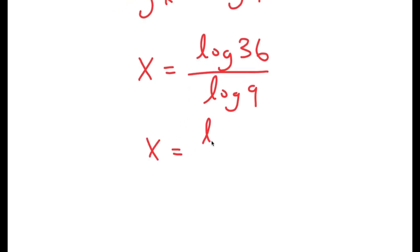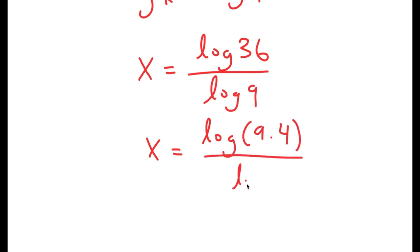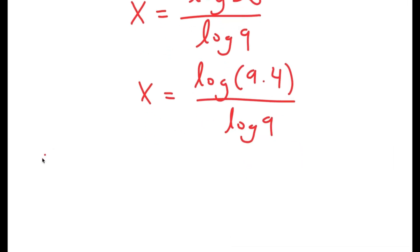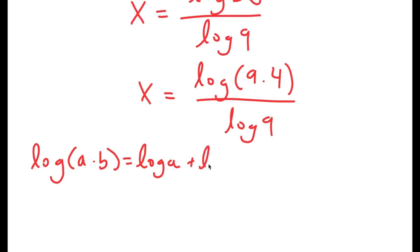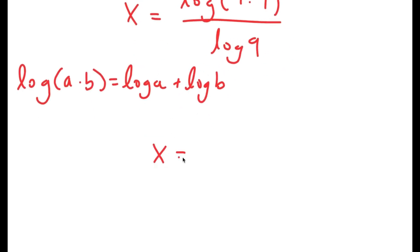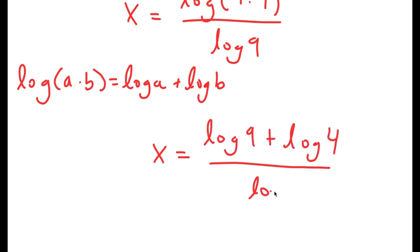Now, I'm going to rewrite log 36 as log of 9 times 4. I did this because I can use the property log of a times b is equal to log a plus log b. This case turns into log 9 plus log 4, and I have this over log 9.